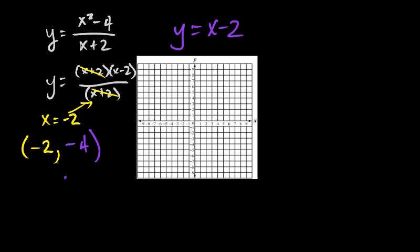So your hole is right here at negative two, negative four. And I would plot that on my graph by finding negative two, negative four, and actually putting an open circle.